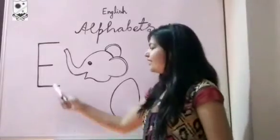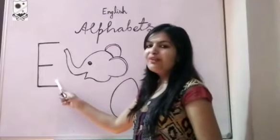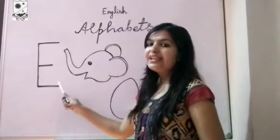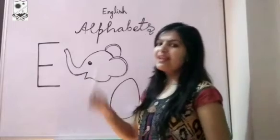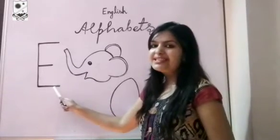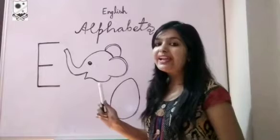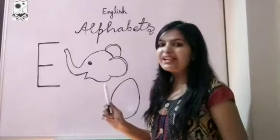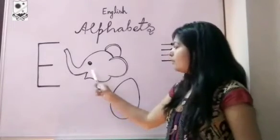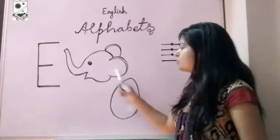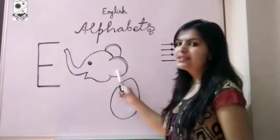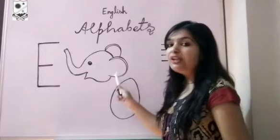Let's start. Look here everyone. This is alphabet E. E is having one sound. The sound of this alphabet is E. Repeat once again. Now along with this alphabet I have drawn two images. This is elephant.